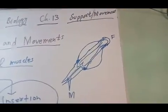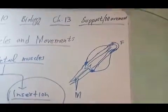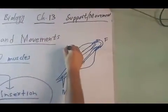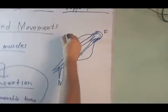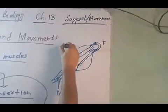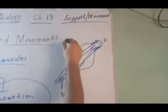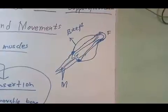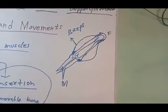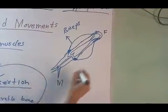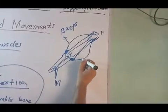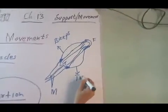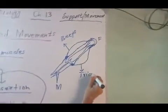The front muscle of the upper arm bone is called biceps, and the back muscle of the upper arm bone is called triceps.